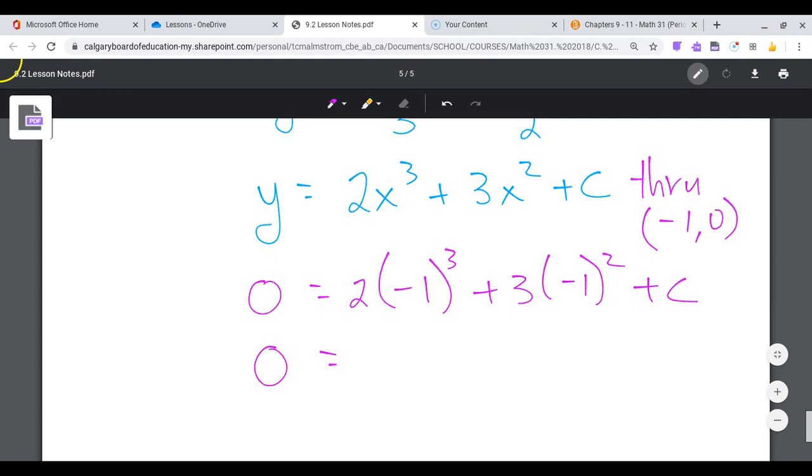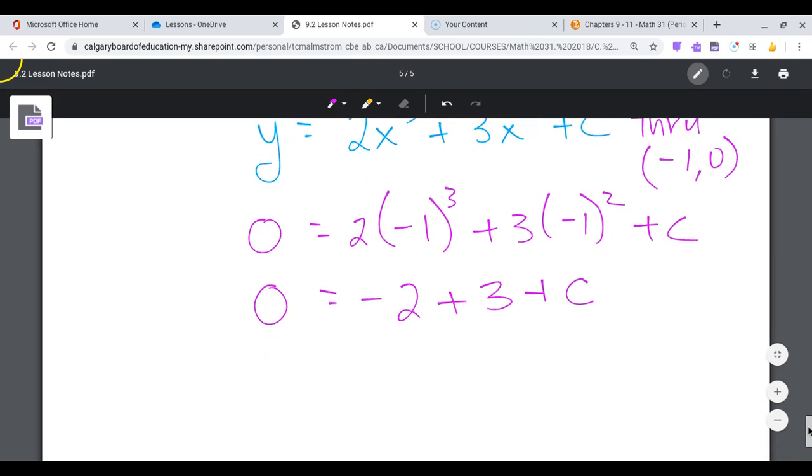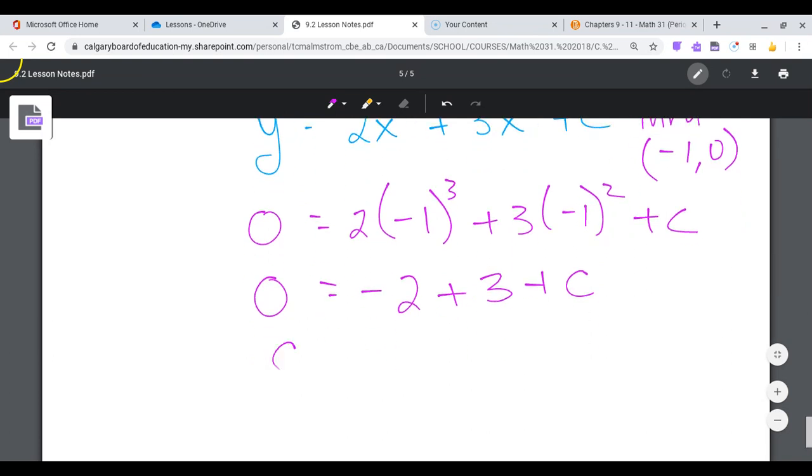So 0 is equal to 2 times negative 1, because negative 1 cubed is negative 1, so we have negative 2. Negative 1 squared is positive 1, so plus 3 plus c. So negative 2 plus 3 is 1, so that makes c equal to negative 1 when you move the 1 to the other side.